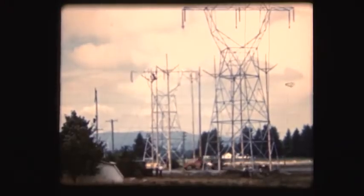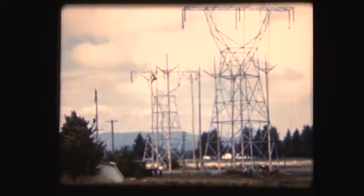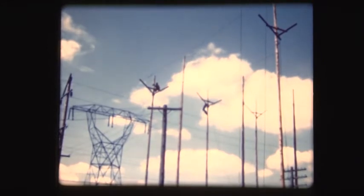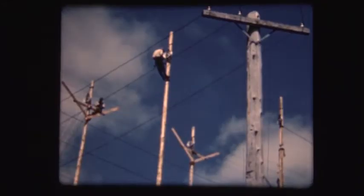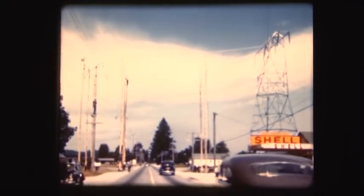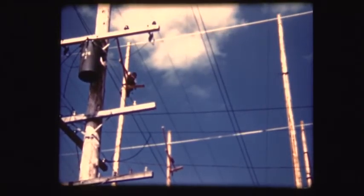When a line must be strung across an obstruction such as a highway, railroad, or other power line, crossing guards are used. These are temporary wood pole structures fitted with shivs to support the conductor while it is being pulled through. Y arms are usually fitted below the shivs for added protection. This method makes it possible to cross busy highways without disrupting traffic or even live power lines when necessary.